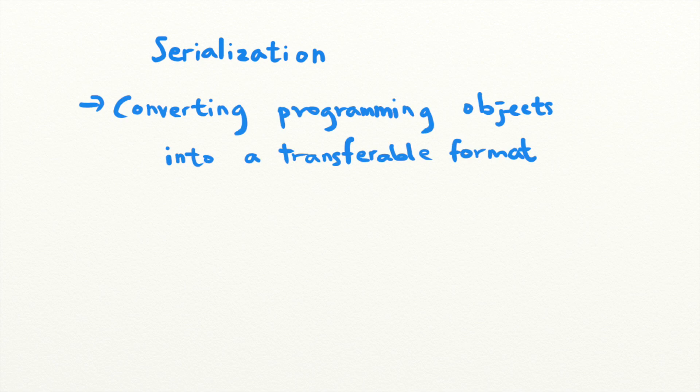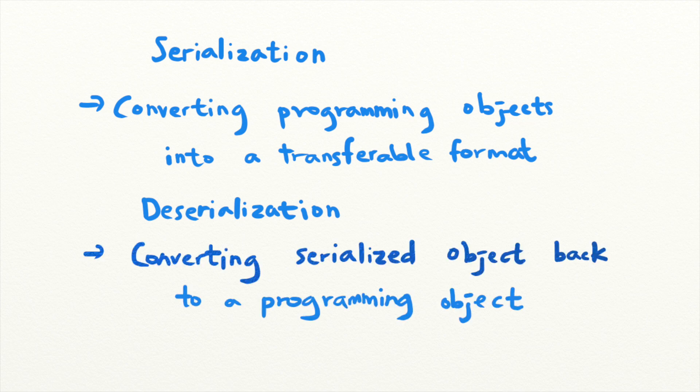Welcome back to Security Simplified. Serialization is when an object in a programming language like a Java or PHP object is converted into a format that can be stored or transferred over a network, whereas deserialization refers to the opposite. It's when the serialized object is read from a file or the network and converted back into an object.